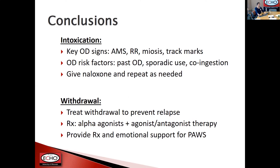In conclusion, key aspects of intoxication: signs are altered mental status, respiratory depression, miosis, and track marks. Major risk factors are history of overdose, sporadic use, and co-ingestion. If you see overdose, give naloxone and repeat. For withdrawal, focus on treating withdrawal symptoms to prevent relapse. Your agents are alpha agonists and then opioid agonists or antagonists. Don't forget to provide pharmacological and emotional support during the post-acute withdrawal period to help folks stay in treatment.